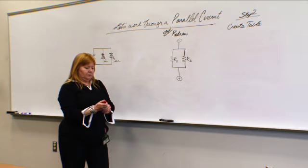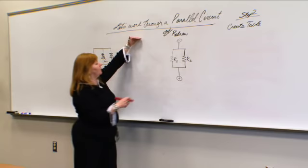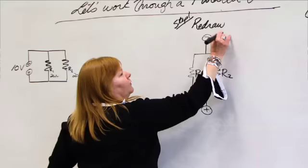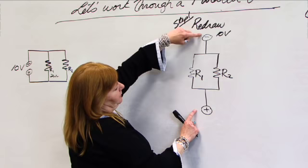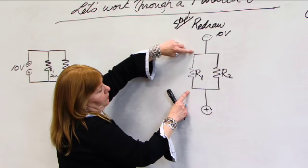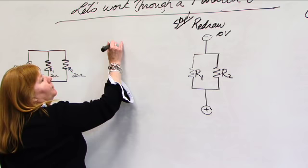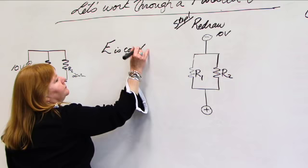Let's talk about voltage potential. If I have 10 volts offered to this circuit — 10 volt potential from the negative to the positive — this is just a straight wire. You can see that the voltage potential over R1 is exactly the same as the voltage potential over R2, which means voltage is constant. So one thing we know about parallel circuits is voltage is constant.